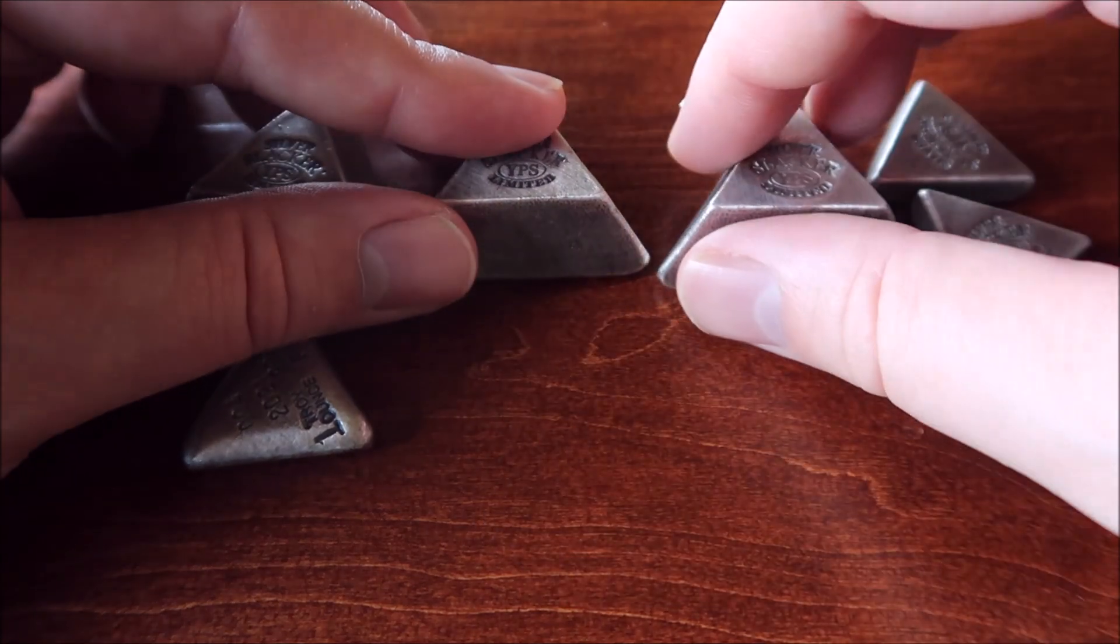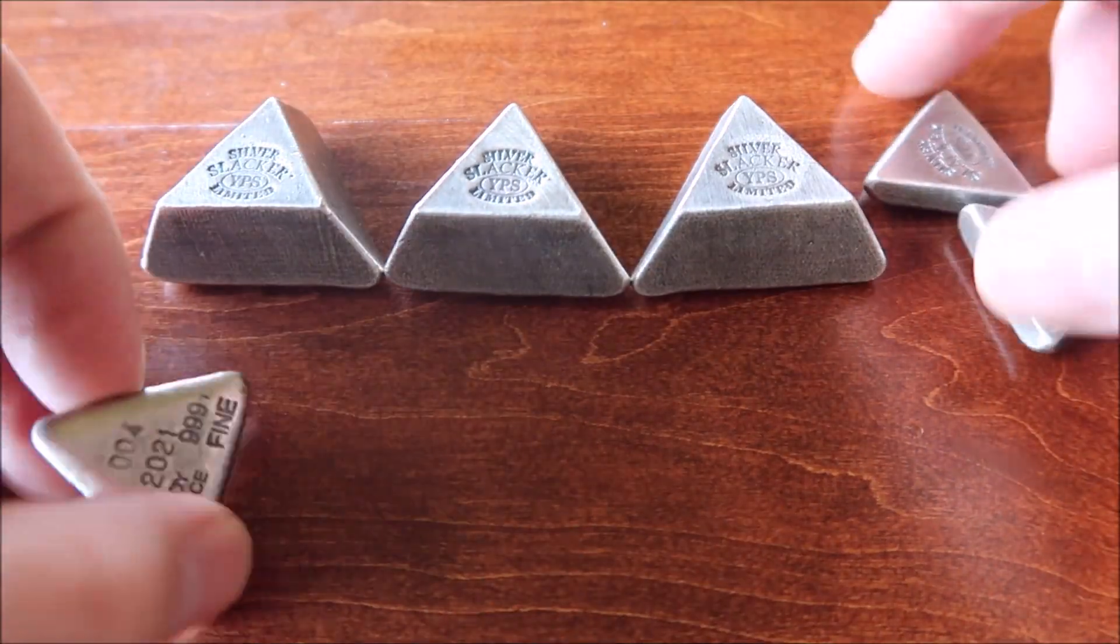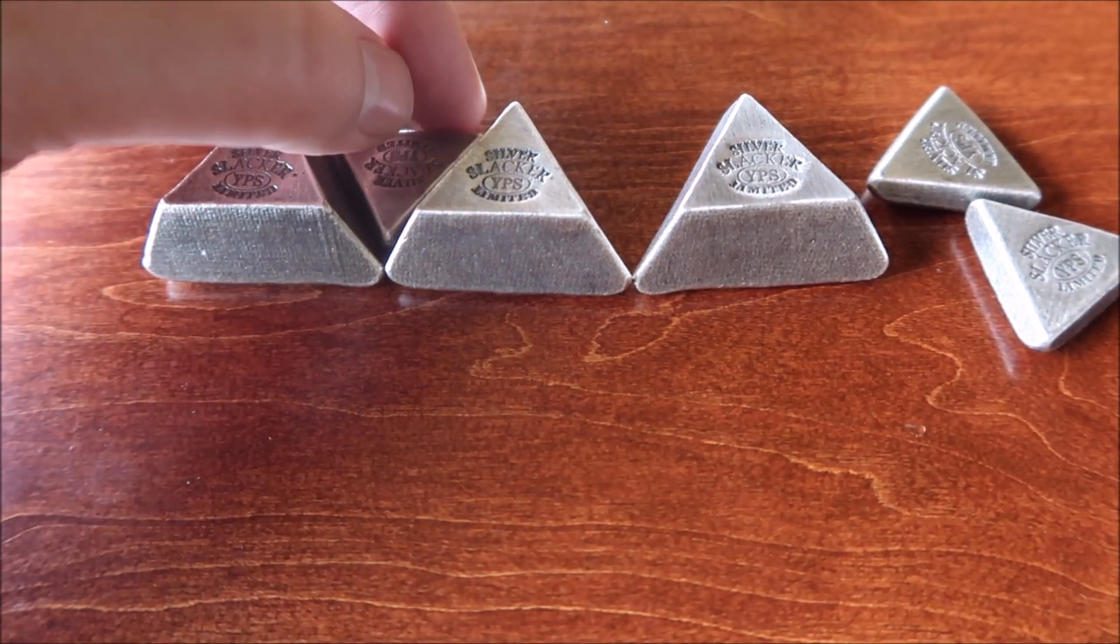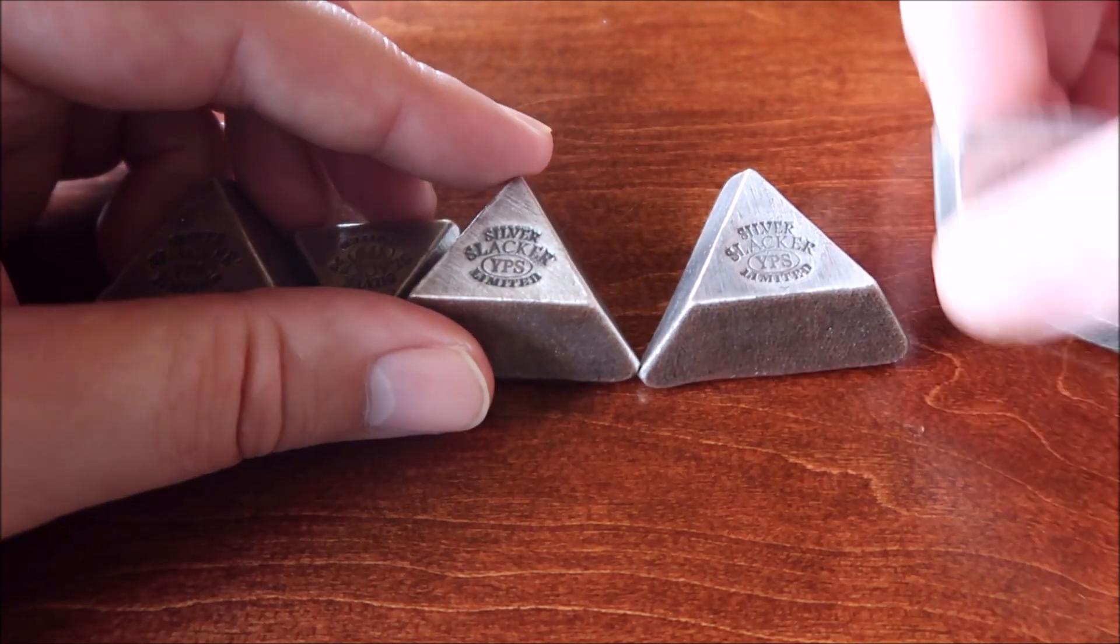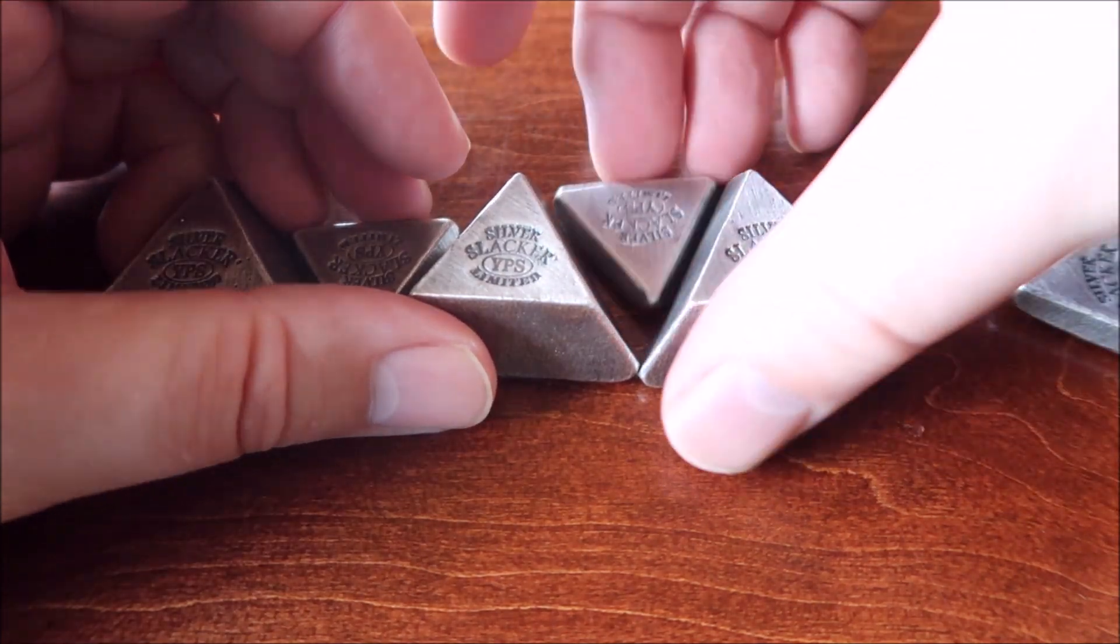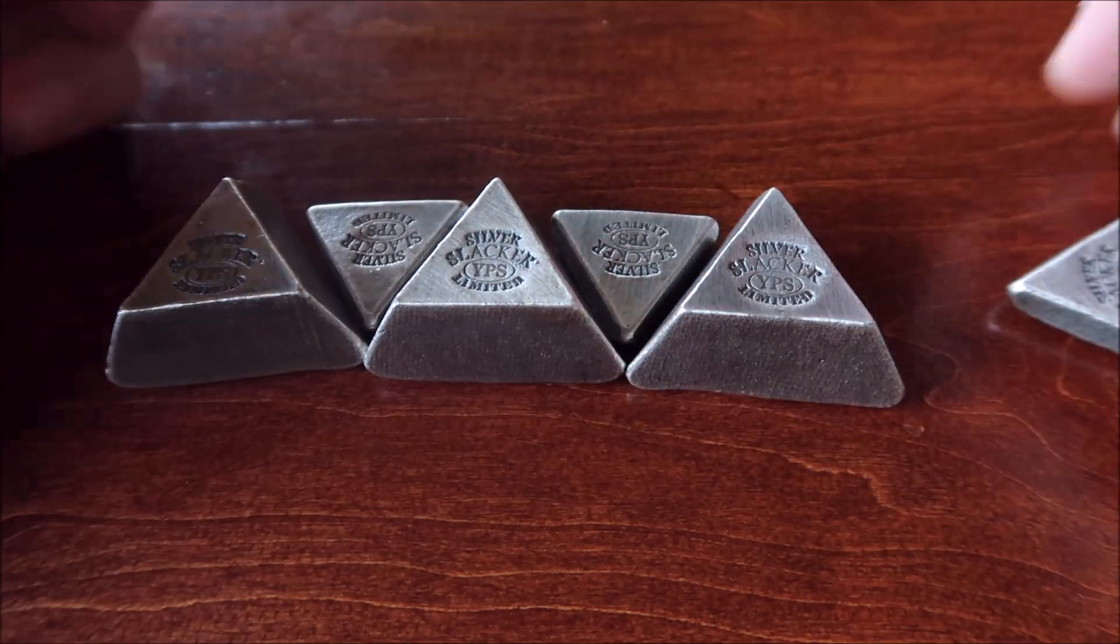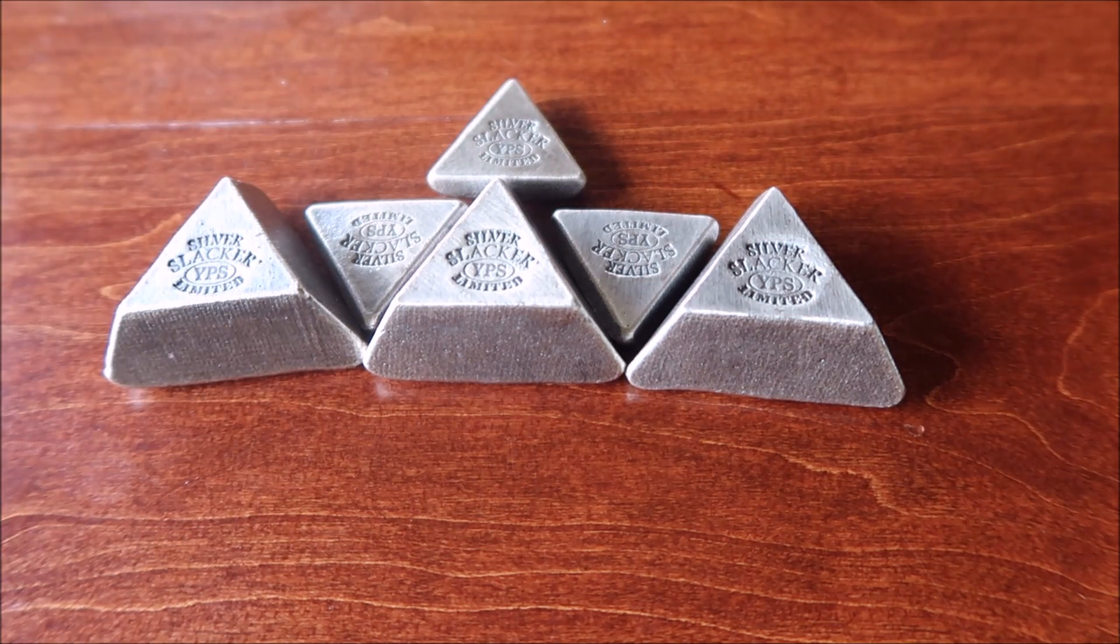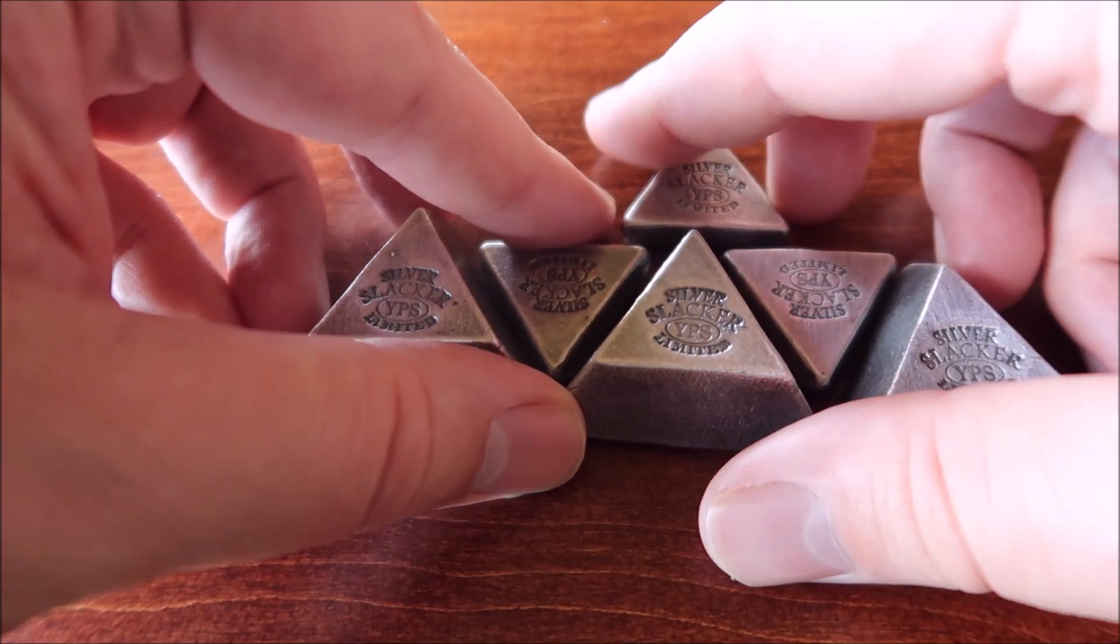These are going on sale first come first serve. They will be 50 sets, or actually I bought three of them myself, so there will be 47 sets. The first 50 serial numbers will be a set of the one ounce and the four ounce. So the quicker you get your order in, the lower your serial number is going to be, except I have number one, four, and five. So all the other ones are available.